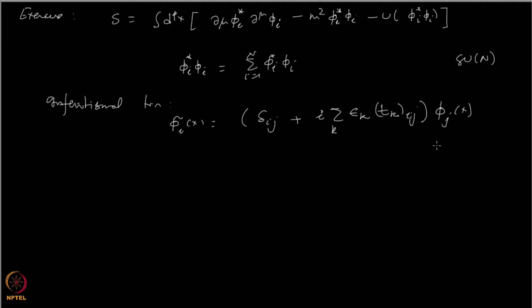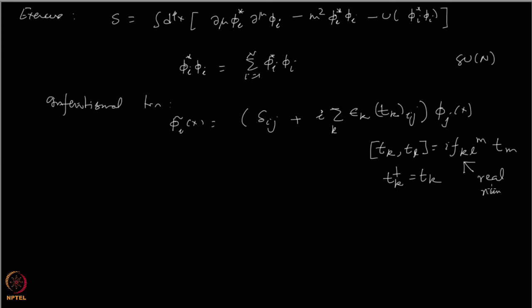The generators satisfy the algebra [T^k, T^l] = i f^{klm} T^m, with the generators being Hermitian and the structure constants f being real numbers. Now, construct a conserved charge Q_k by taking one epsilon_k to be nonzero and all others zero, and find the charge corresponding to that symmetry transformation.